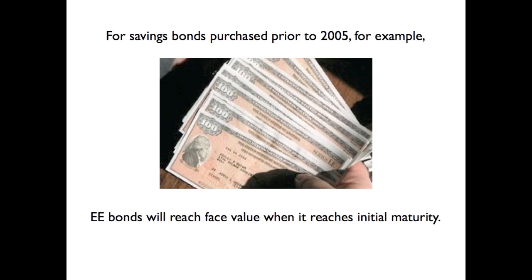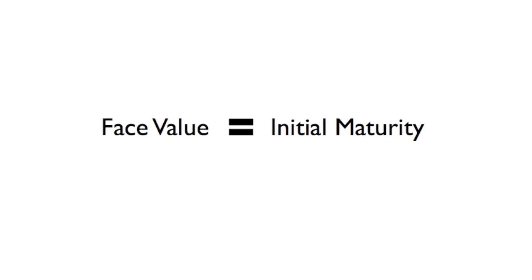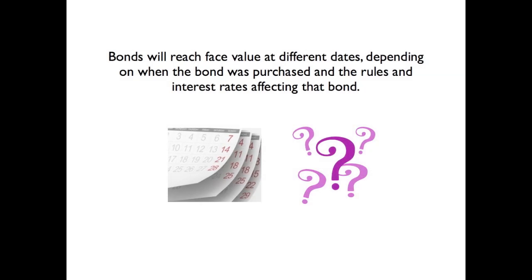For savings bonds purchased prior to 2005, for example EE bonds, they will reach a face value when they reach initial maturity. You will receive the dollar amount that is printed on the face of the bond at the bond's initial maturity. Bonds will reach face value at different dates depending on when the bond was purchased and the rules and interest rates affecting that bond.